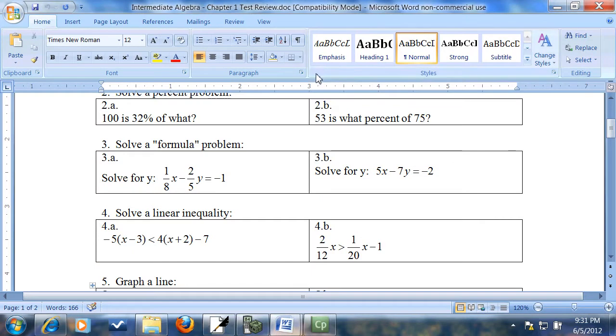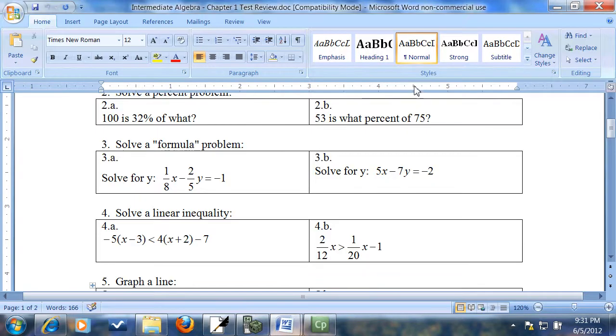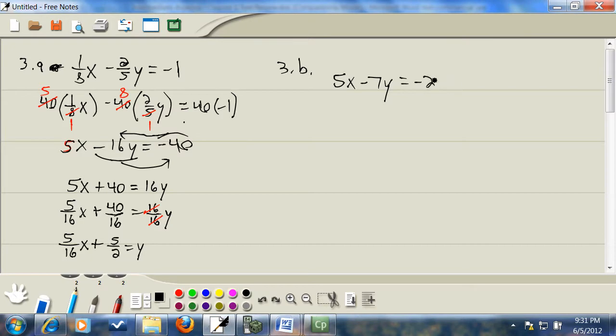Let's look at our next problem. Three B. Five x minus seven y equals negative two. First step, get rid of parentheses. Don't have any. Second step, get rid of fractions. Don't have any.